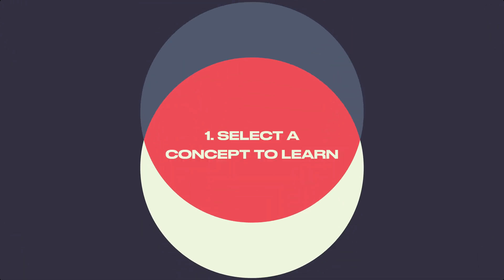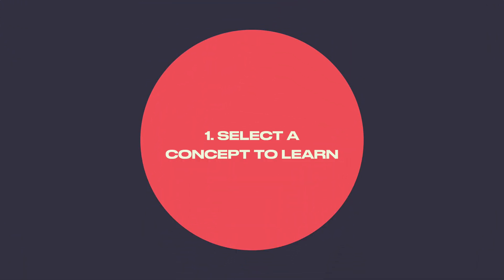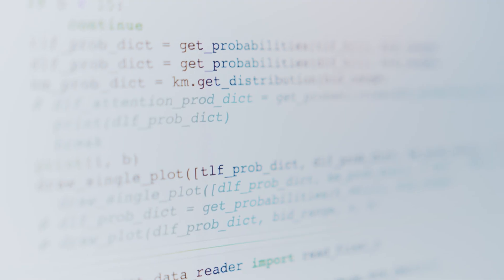Step one: select a concept to learn. If you're watching this video you probably want to start learning how to code, but where do you start? When I started learning coding without much guidance I just jumped into some online courses. Software engineering is such a wide discipline with many different sub-disciplines that jumping in without doing some research into a discipline you'd actually be interested in is not a great idea.